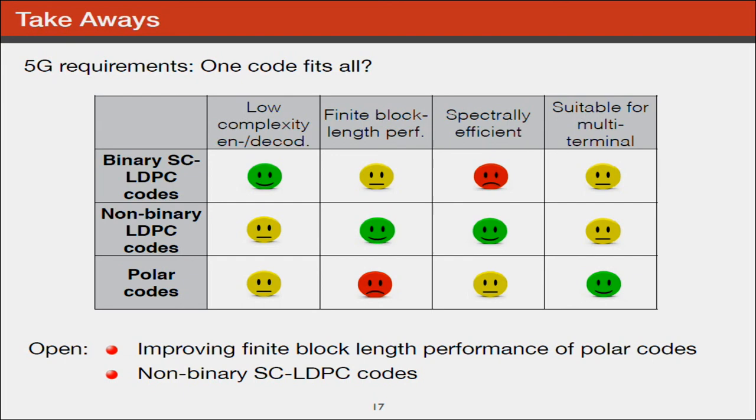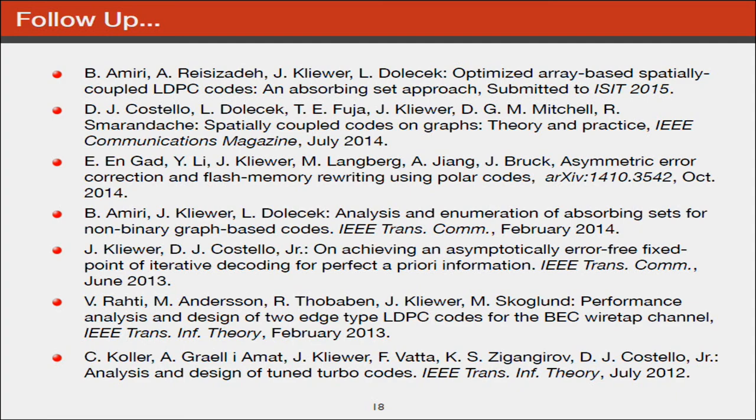What do we conclude? There are two conclusions. First, if we could improve finite block length performance of polar codes while keeping the multi-terminal feature, that would be great. But essentially, non-binary spatially coupled LDPC codes, combining these two properties, might be a good candidate for future 5G coding schemes because they have the best of both worlds. This ends my talk. I want to give you a list of publications related to the area I co-authored with many other people. Thanks a lot.